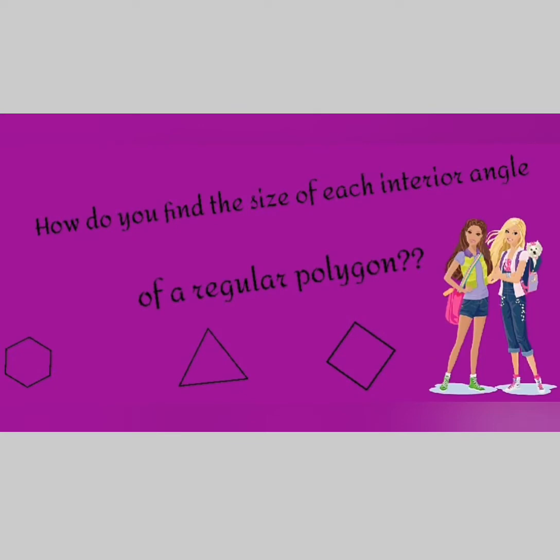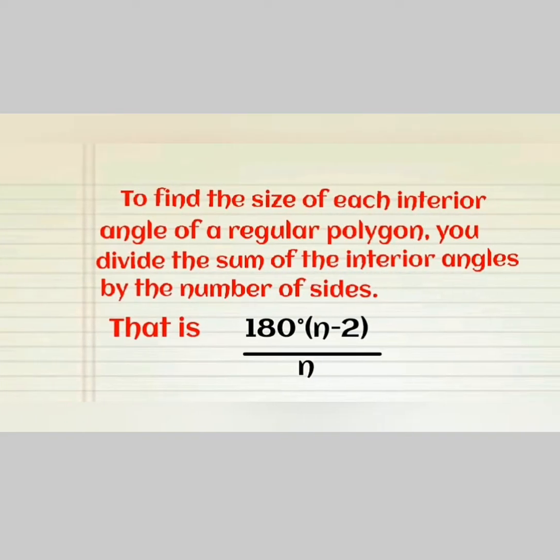And my question to you is, how do you find the size of each interior angle of a regular polygon? To find the size of each interior angle of a regular polygon, you divide the sum of the interior angles by the number of sides. That is, 180 degrees times n minus 2, which gives you the sum, divided by n, where n represents the number of sides of the polygon.